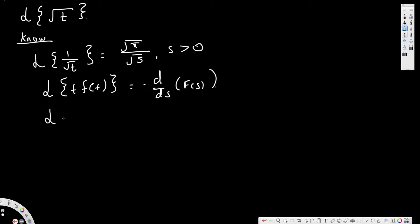Now, we are trying to find the Laplace transform of square root of t. You can see this function — how can we turn this into the pattern t times f(t)? If you think about it, t times 1 over square root of t: if you multiply square root of t times square root of t you get t, so replacing that gives us square root of t.